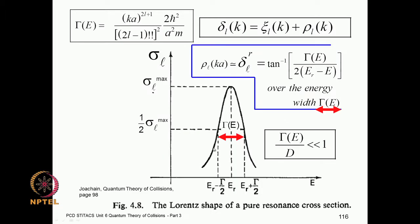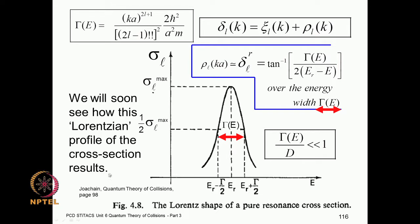Here is an example: the resonance phase shift is given by tan⁻¹ of this ratio. In this width, the scattering cross section will rise sharply, go to a maximum at the resonance energy, and then come down. This is a pure Lorentzian resonance — most resonances we meet in atomic physics are not pure resonances, but this is a pure Lorentzian kind of resonance cross section figure from Joachain's book, page 98.